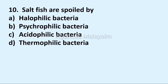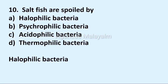10th question: salt fish are spoiled by. Option A: halophilic bacteria. Option B: psychrophilic bacteria. Option C: acidophilic bacteria. Option D: thermophilic bacteria. Correct answer: Option A, halophilic bacteria.